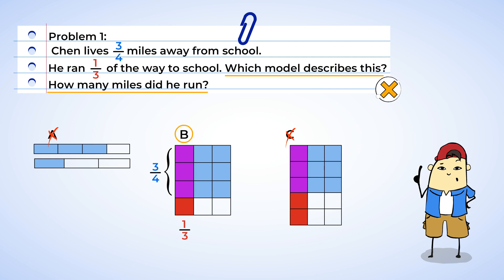Perfect! Now let's use the model to find out how many miles Chen ran. Well, there are a total of 12 parts, giving us a denominator of 12. There are three sections that are colored by both the red and blue to make purple. So this is our numerator. Chen ran three-twelfths of a mile. Way to go, Chen!